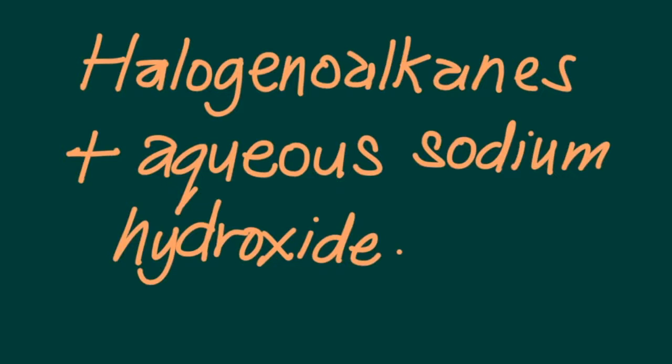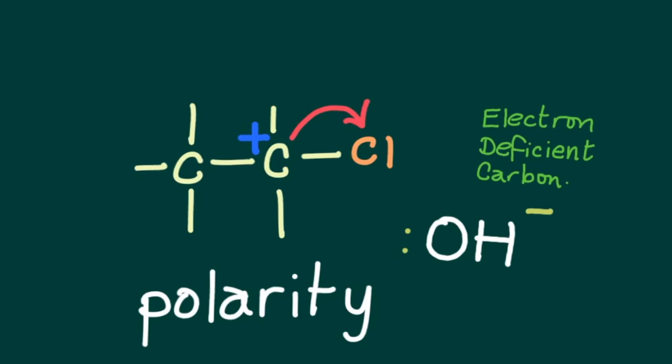The reaction between halogenoalkanes and aqueous sodium hydroxide. A halogenoalkane can be represented with a chloride or halogen, typically chlorine or bromine, attached to a carbon which in turn could be attached to two other hydrogens and a CH3 group.